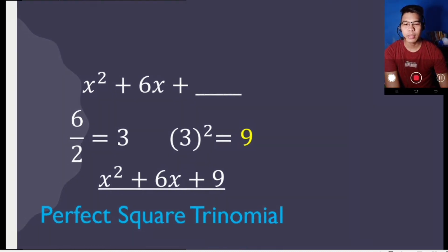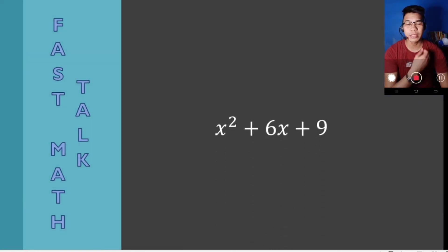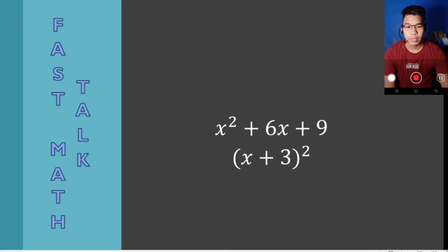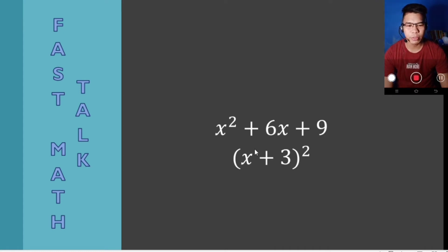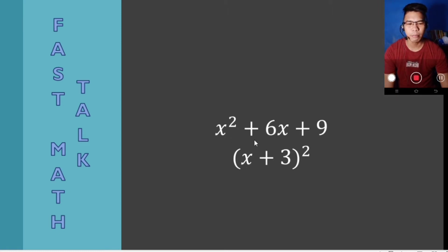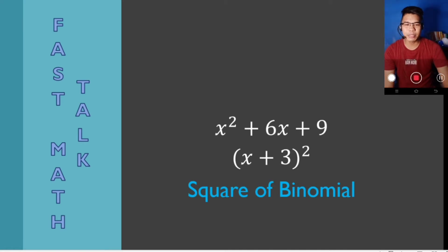Since this is already a perfect square trinomial, we now factor it into a square of binomial. We get the square root of x squared, which is x, and then the square root of 9, which is 3. The operation depends on the sign of the middle term, which is positive. So the result is quantity x plus 3, quantity squared. This is the equivalent square of binomial for x squared plus 6x plus 9.